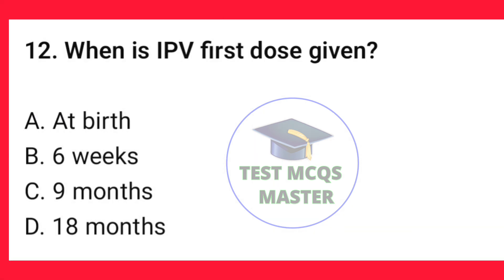Question number 12. When is IPV first dose given? The correct option is B — six weeks.